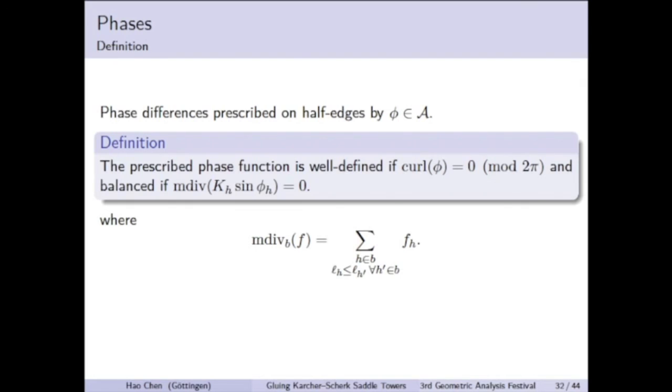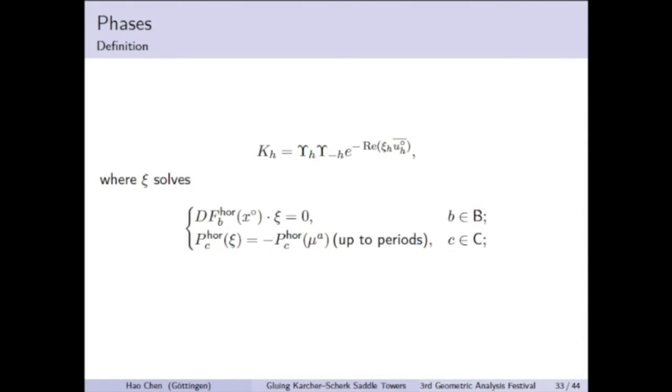So why is this strange formula? That is because this term k sin φ is not the real force. The real force has another factor which dominates on short edges as we approach the saddle tower limit.